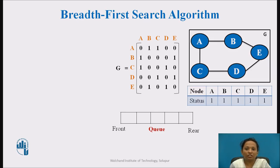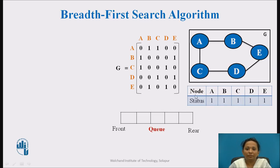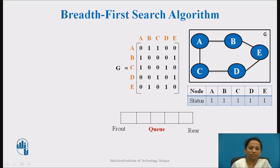Now we will discuss the breadth-first search algorithm in detail. We have considered graph G with nodes A, B, C, D, and E. This is the adjacency matrix representation of graph G, which will be the input to the breadth-first search algorithm. This is the status array showing the status of individual nodes, and the queue data structure which will be used for storing nodes for further processing.